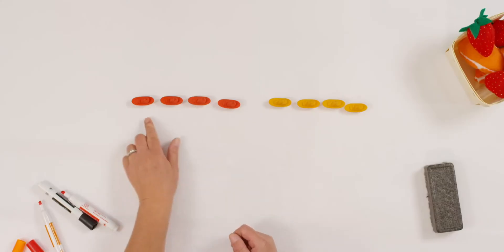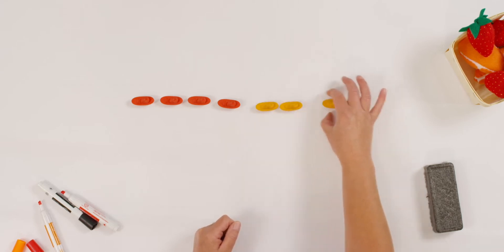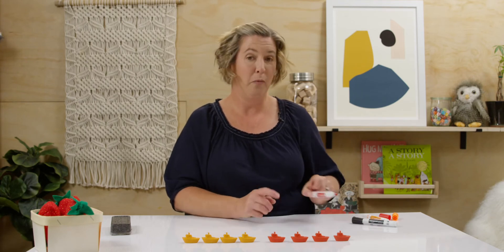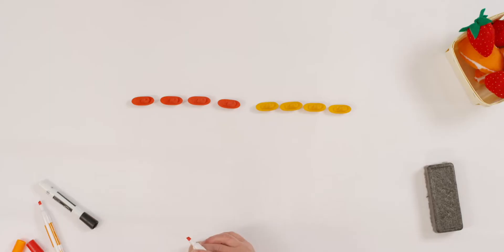Boats were entering a parade. First, four red boats started and then four more orange boats joined. There were eight boats all together. Let's make that into a sentence. How many red boats were there first? Four. It's addition, so we'll put the plus sign. And how many orange boats joined? Four more.